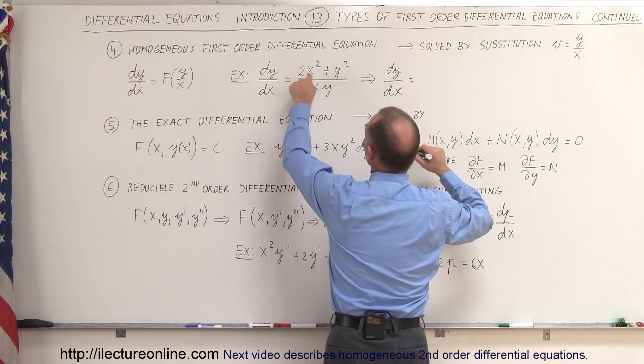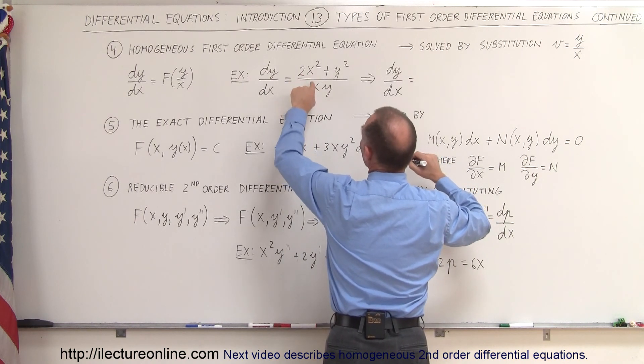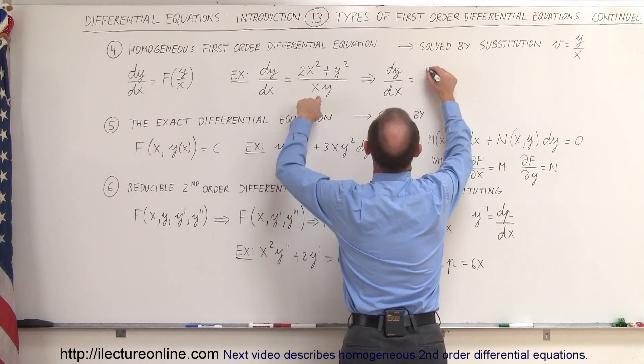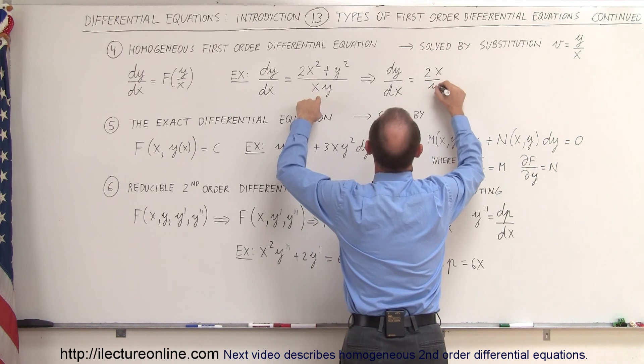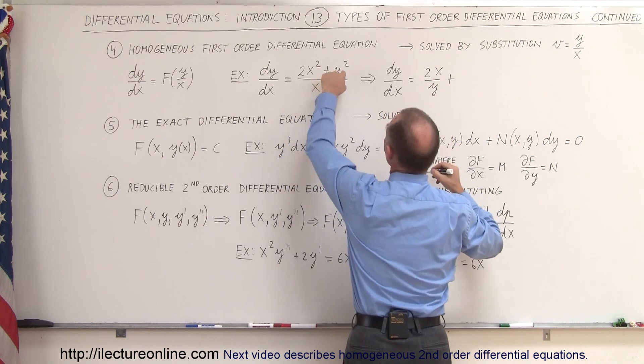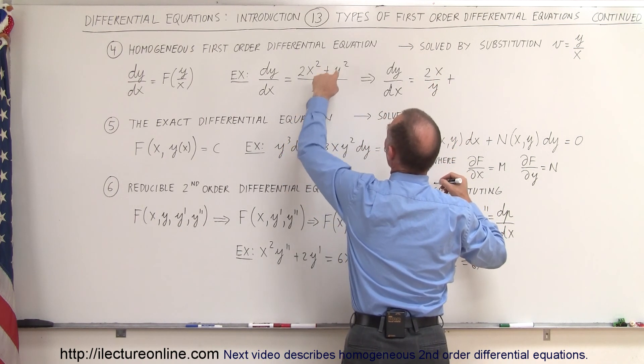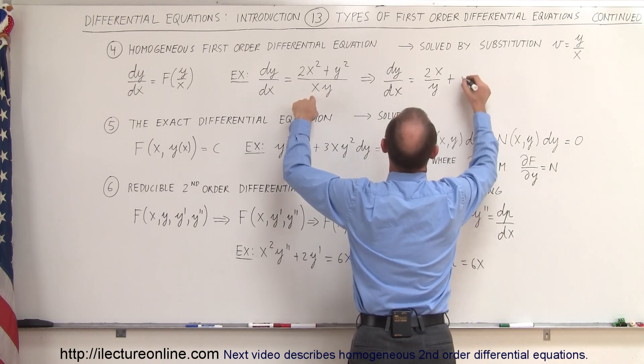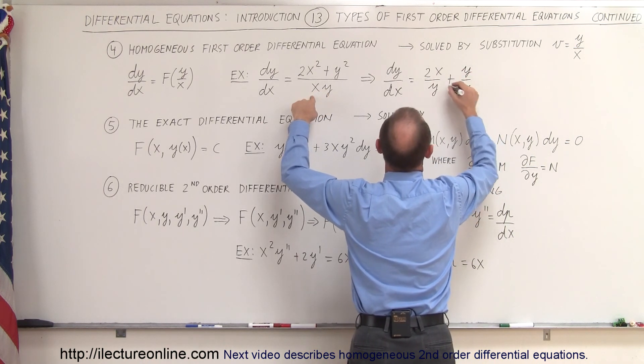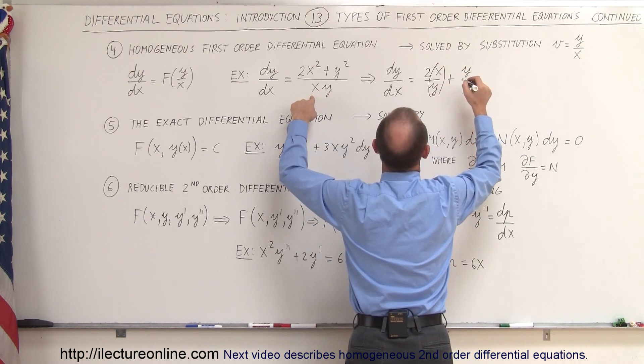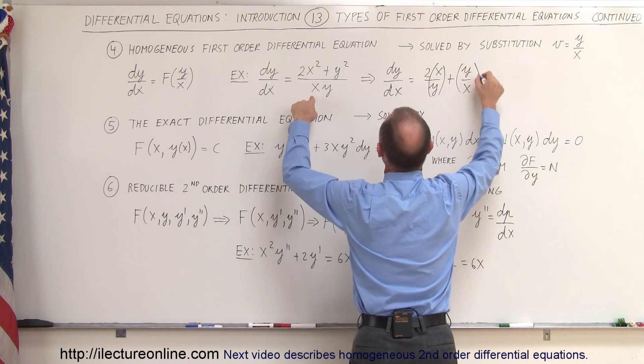The x squared divided by x, the x cancels here. So we end up with a 2x over y plus, and when we divide this into that, the y cancels out this y, and we end up with a plus y over x. And then notice we have an x over y, and we have a y over x.